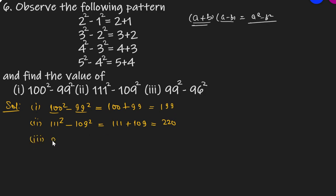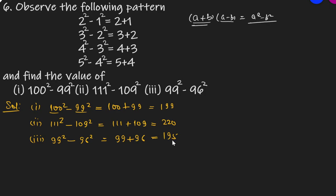Third one: 99 square minus 96 square. यहां पर हमें इन दोनों numbers को बस add करना है — 99 plus 96. यहां पर जो किया है वही कर रहे हैं, pattern के according.